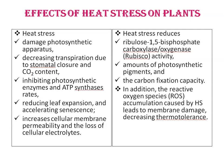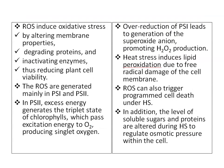Rubisco enzyme usually works efficiently between temperatures of 20 and 30 degrees Celsius. In addition, reactive oxygen species (ROS) accumulation caused by heat stress leads to membrane damage and decreasing thermotolerance. ROS induce oxidative stress by altering membrane properties, degrading proteins and inactivating enzymes, thus reducing plant cell viability. The ROS are generated mainly in Photosystem I (PS1) and Photosystem II (PS2).